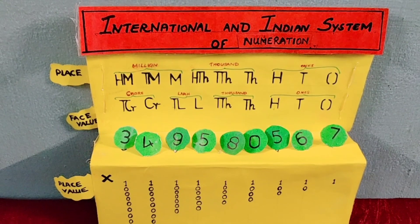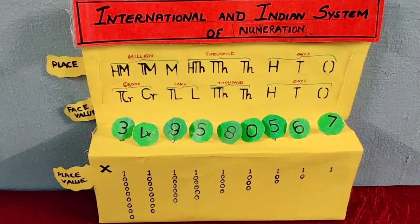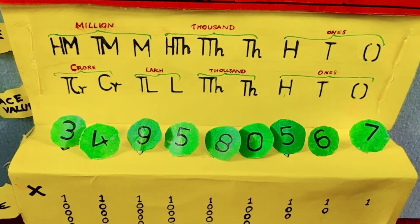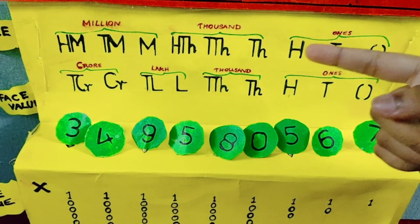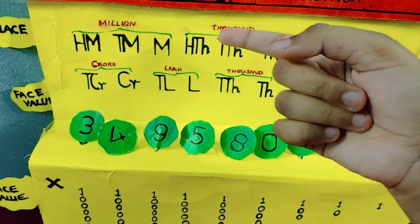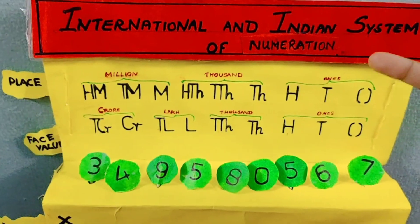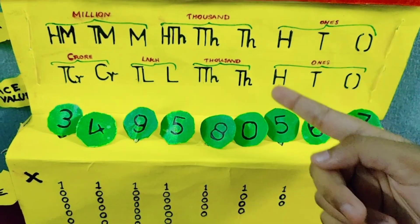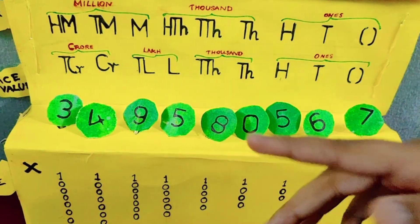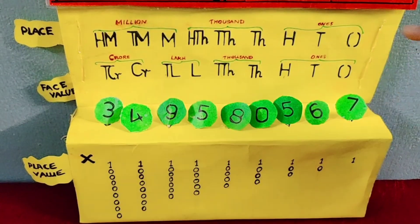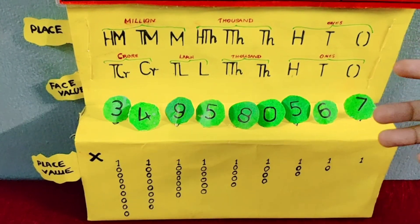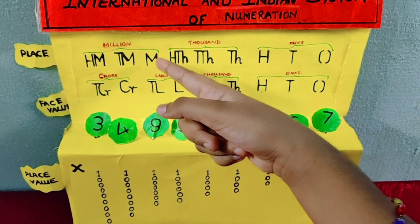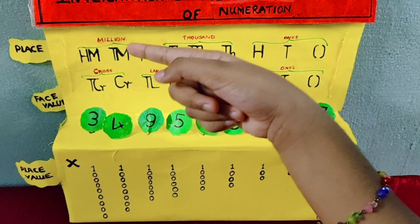In this working model, we can also compare the international and Indian system of numeration. In the international system: 100, 10, 1 forms the ones period; 100,000, 10,000, 1000 forms the thousands period; 100 million, 10 million, 1 million forms the millions period. In the Indian system: 10,000 and 1000 forms the thousands period; 10 lakh and 1 lakh forms the lakhs period; 10 crore and 1 crore forms the crores period. From 1 to 10,000 they are the same. From this onwards they are different: 100,000 is equal to 1 lakh, 1 million is equal to 10 lakh, 10 million is equal to 1 crore, 100 million is equal to 10 crore.